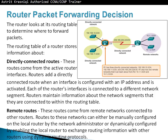The router maintains information about the network segments it is connected to in the routing table. The router also keeps remote routes — routes that come from remote network destinations via other routers. Routes can either be manually configured by the administrator or dynamically configured by enabling the router to exchange routing information with other routers using dynamic routing protocols. For example, router 1 here has three directly connected networks: one on each interface, including 192.168.11.0 and 209.165.200.224 on the serial interface.